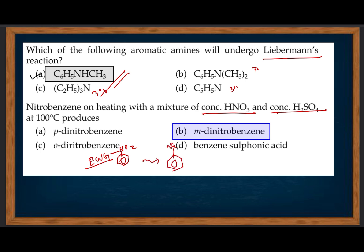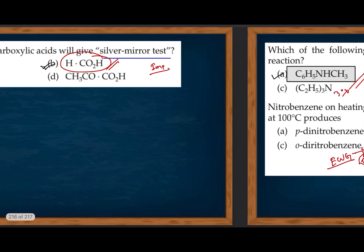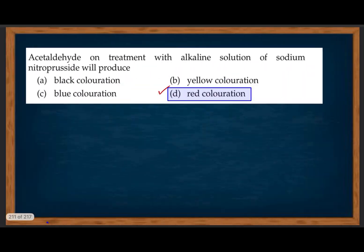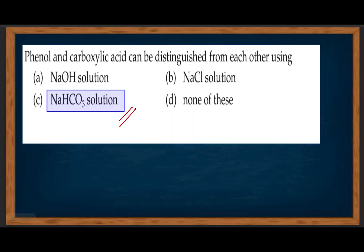Nitrobenzene undergoes nitration at the meta position because the nitro group is an electron-withdrawing group. For 2,4-dinitrophenol, substitution occurs at specific positions on the benzene ring. These are important questions for organic practical chemistry.